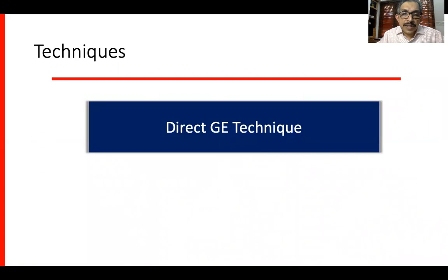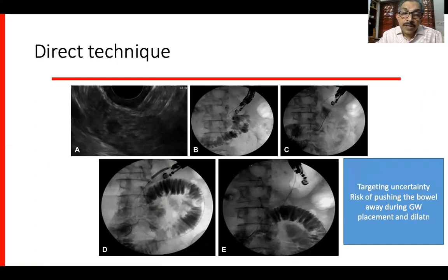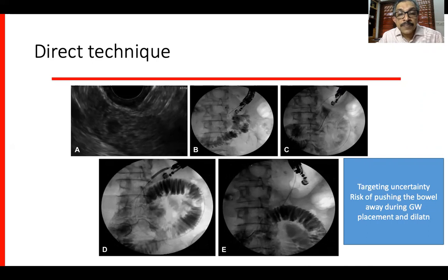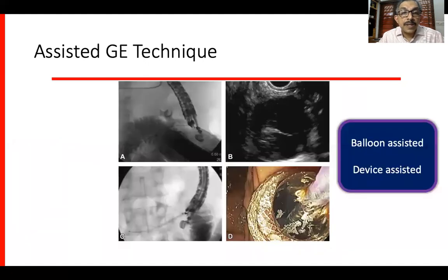There are different techniques which have been described: the direct GE technique, the assisted GE technique, and the EPAS technique. The direct GE technique involves puncturing a loop of bowel from the stomach, then instilling contrast dye mixed with methylene blue and saline to distend the loop, passing a guide wire, dilating the track with a 4 mm balloon, and then placing a LAMS. However, the targeting uncertainty is a problem, as you may not see a good loop of bowel, and there is a risk of pushing the bowel away during guide wire placement and dilatation.